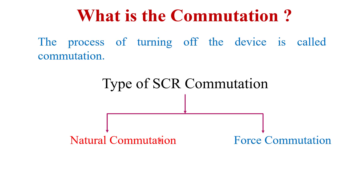Let's start with the topic. Before discussing the difference between natural commutation and force commutation, I will give a brief introduction of commutation. Commutation is basically a process of turning off a device, or we can say that the technique of turning off a device is called commutation. In terms of SCR, commutation is the process by which the SCR is turned off from its turn-on state.